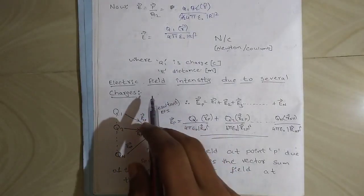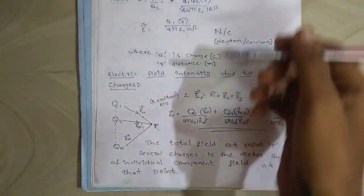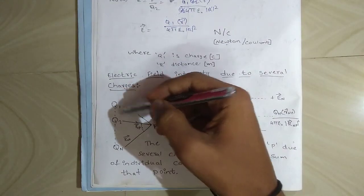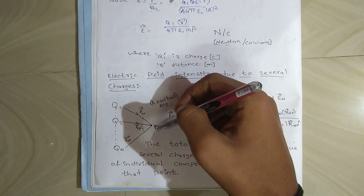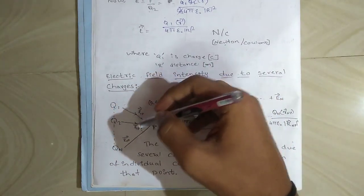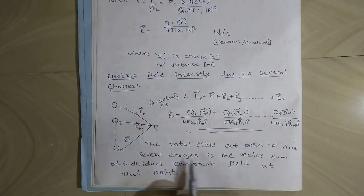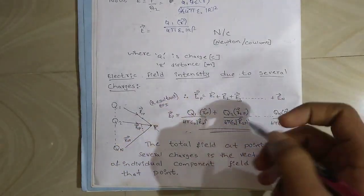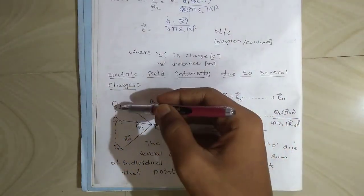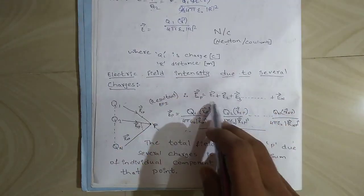Now we will see how to find EFI due to several point charges. Here q1, q2, and other point charges are applying EFI on point P. r1P and r2P are the distances from each charge to point P. The total field at point P due to several charges is the vector sum of the individual component fields at that point. This means we have to add individual EFIs due to q1, q2, and so on, to get the resultant EFI.